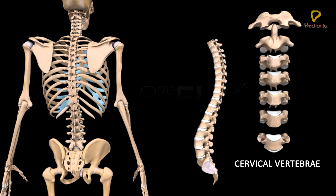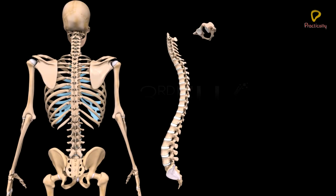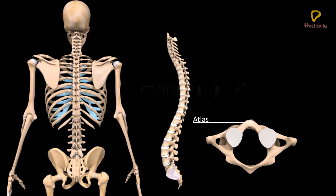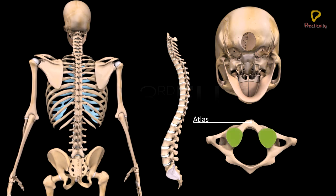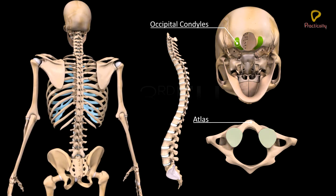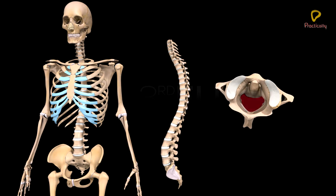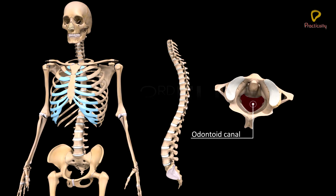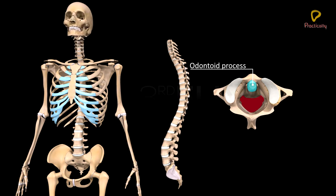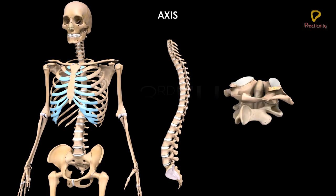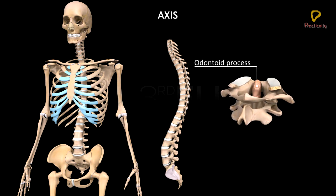Cervical vertebrae: These are the seven small-sized vertebrae of the neck region. The first cervical vertebra is the atlas, which is wing-like and lacks a centrum. It has two articular facets for articulation with the occipital condyles of the occipital bone of the skull for nodding movement of the head. It also has an odontoid canal for articulation with the odontoid process of the axis for sideways movement or rotation of the head. The second cervical vertebra is the axis, which has an odontoid process for articulation with the atlas.